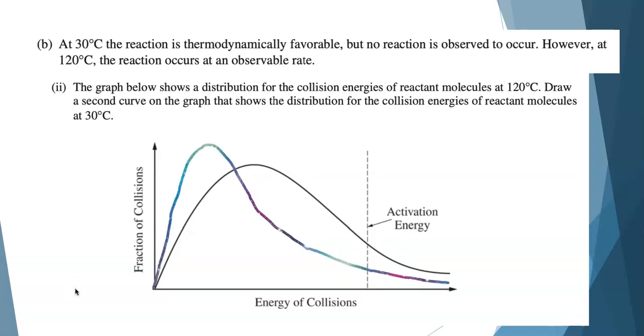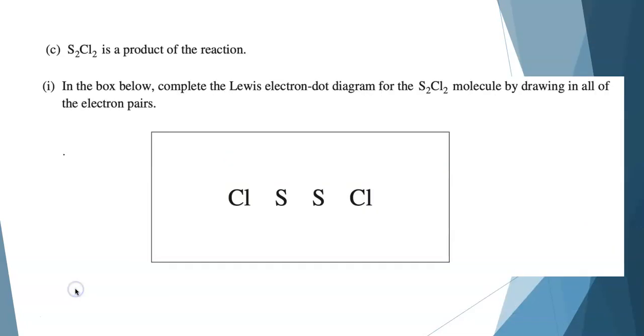Here's what your curve should look like. Notice that my peak is to the left of the peak that was originally drawn. And beyond the activation energy line, my curve that I just drew in is lower than the curve that was originally given. That's what you needed to have for the two points: those two aspects of the curve.